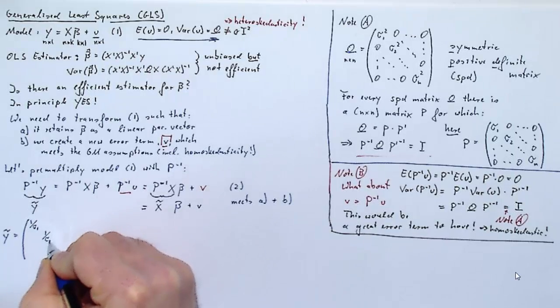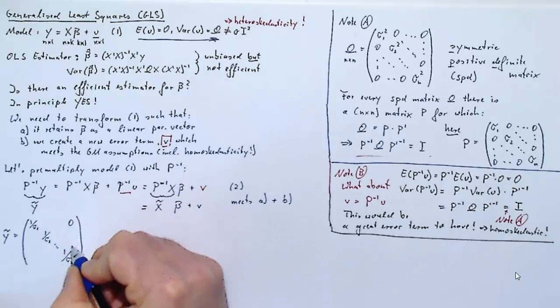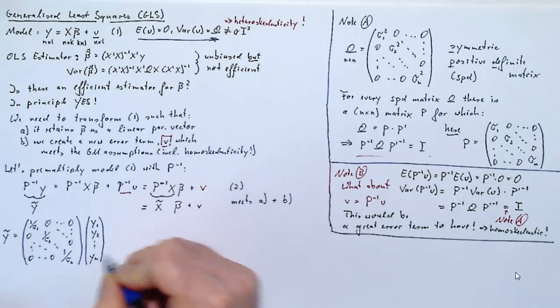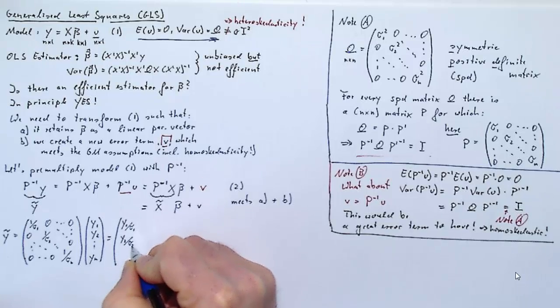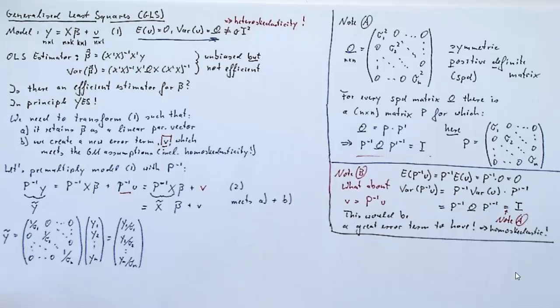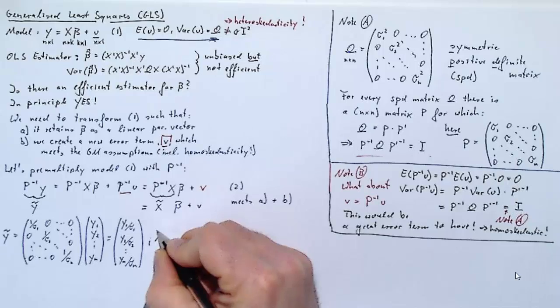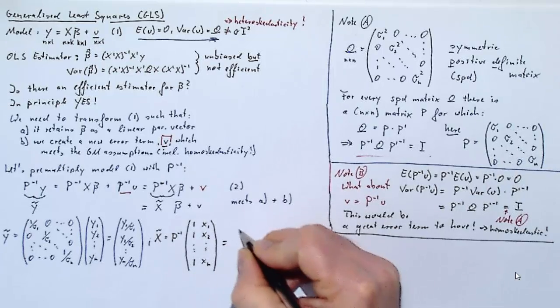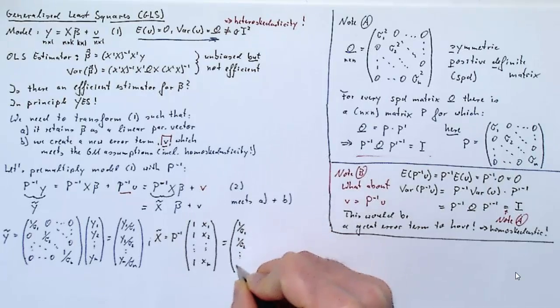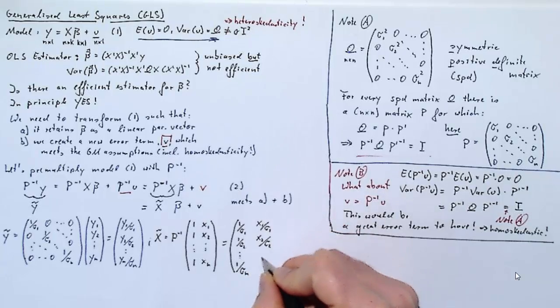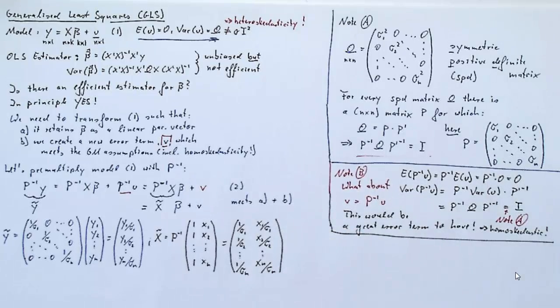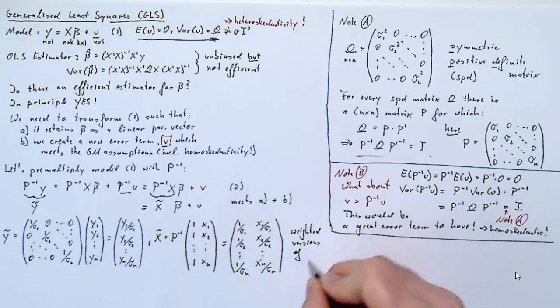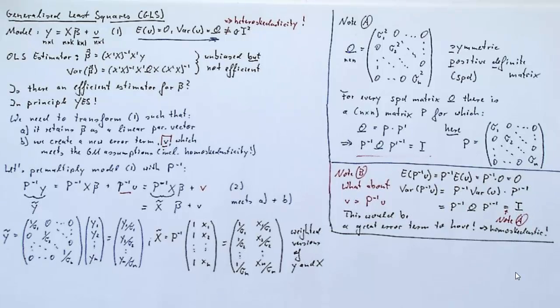Let's try and understand what that Y tilde and the X tilde are. P inverse is 1 over sigma 1, 1 over sigma 2 and so forth on the diagonal and zeros everywhere else times our Y vector, Y1 to Yn. And if you do that matrix multiplication, what you get is Y1 over sigma 1, Y2 over sigma 2, all the way to Yn over sigma n. What about X tilde? X tilde is P inverse times X. Let's assume we just have a constant and one explanatory variable, X1 to Xn. And then we will get 1 over sigma 1, 1 over sigma 2, all the way to 1 over sigma n, and the second column X1 over sigma 1, X2 over sigma 2, all the way to Xn over sigma n. If you look at this Y tilde and X tilde, really what these are, are just weighted versions of Y and X themselves.